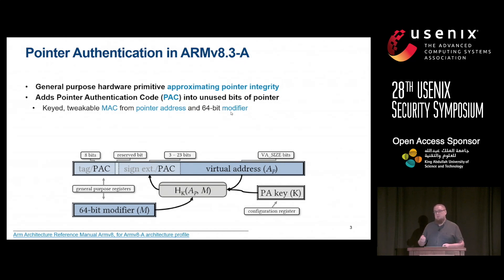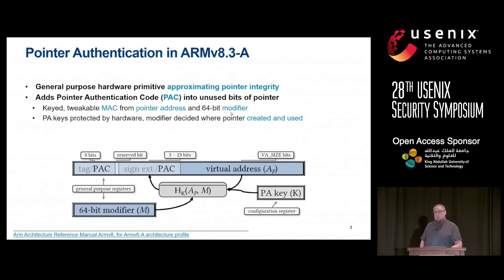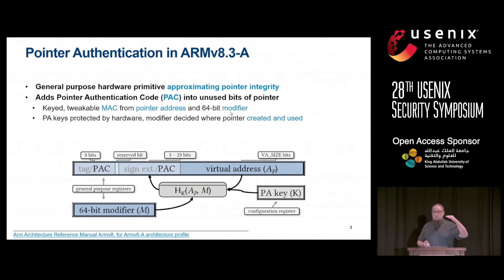This is possible because a pointer is assigned 64 bits, but only a smaller part actually stores the address itself. On a default Linux configuration, there are 16 bits where you can place this PAC code. The PAC itself is a keyed tweakable MAC based on the address bits of the pointer and a 64-bit modifier. The PA keys are protected by the hardware, and the modifiers are set through parameter registers by the instrumentation.